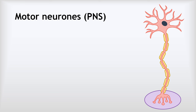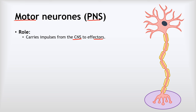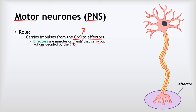Our final type of neuron is the motor neuron, which is also found in the PNS, like sensory neurons. Their role is to carry impulses from the central nervous system to what we call effectors. An effector is either a muscle or a gland — these carry out the actions decided by the central nervous system. A gland is an organ that secretes a substance. For example, in your mouth, saliva is produced by salivary glands; on your skin, sweat is produced by sweat glands. Throughout your body, various glands also produce hormones like adrenaline that help your body function in particular ways.